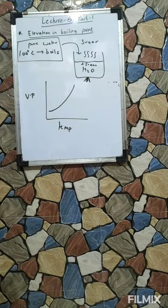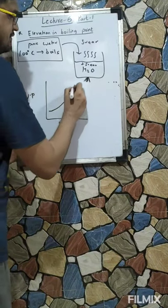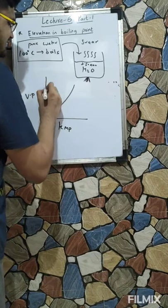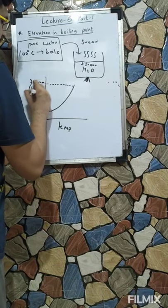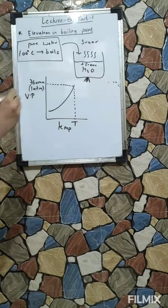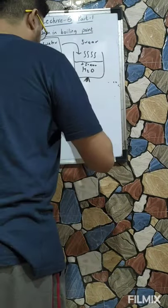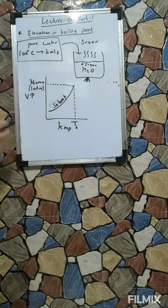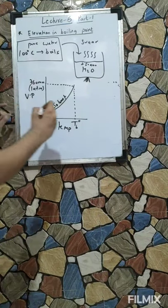If we look at the graph of vapour pressure versus temperature, there are two curves — one for the pure solvent and one for the solution. At 760 mmHg, which is 1 atmosphere, the corresponding temperature for pure water (pure solvent) gives the boiling point Tb°. For the solution, the boiling point is Tb.